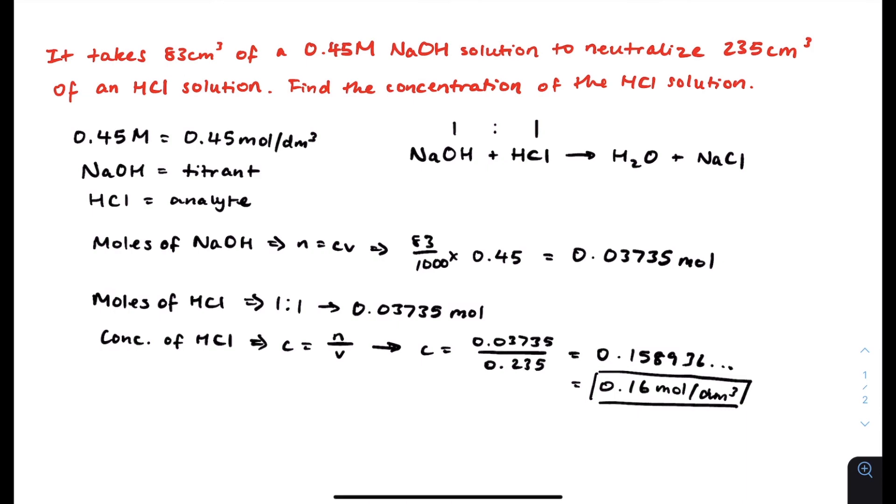I'm going to box my answer to show it. That's the answer I got. So therefore, in this example, the concentration of HCl solution used is 0.16 moles per dm cubed. It can also be represented as 0.16M for molar as this was used in the question. Either way is fine.